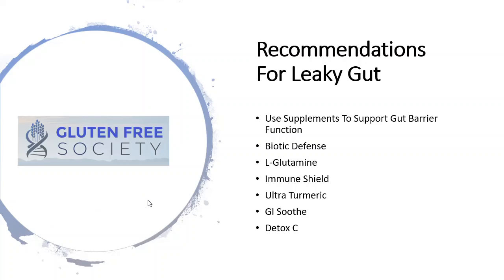Some recommendations for leaky gut — these are supplemental support recommendations, so again these are your secondary component. Number one: biotic defense, a probiotic that helps replenish and support your microbiome's reestablishment — one of the key barriers of your gut. Number two: L-glutamine, the fuel source for cells in your small intestine — what they use to generate energy. Without adequate quantities, those cells starve to death and leaky gut continues to perpetuate. Number three: immune shield, a surrogate antibody formula that supports antibody levels in your gut so you can bind bad guys and push them out.